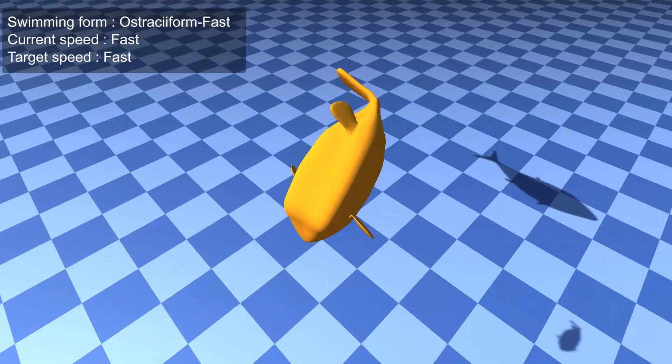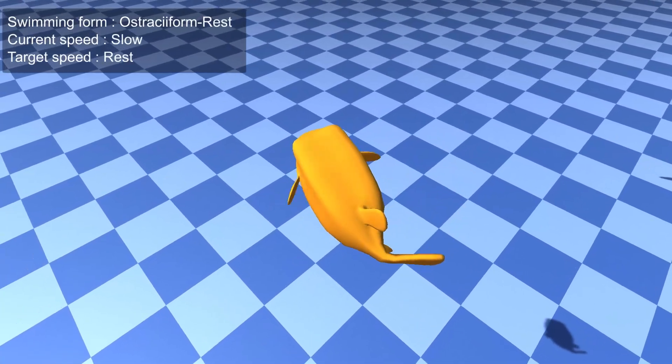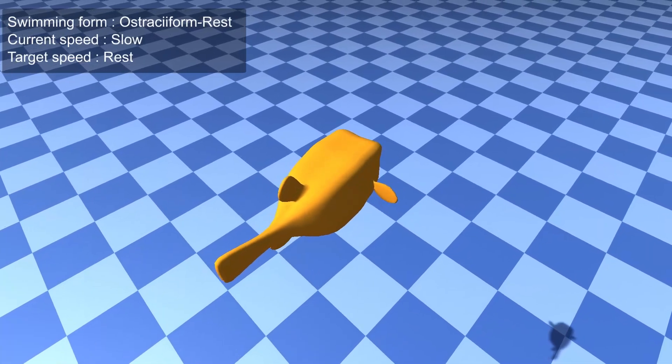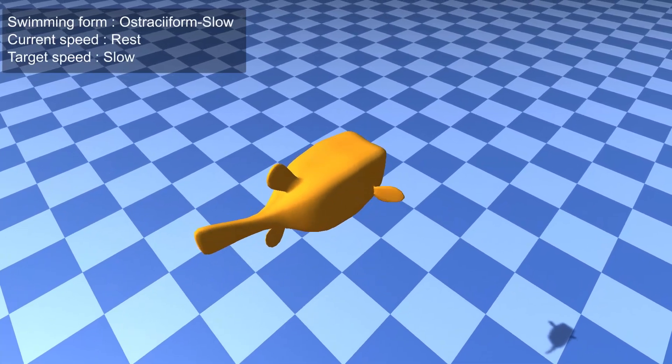While this virtual fish oscillates its pectoral fins and anal fin when swimming slowly, it also oscillates its dorsal fin and caudal fin when swimming fast.